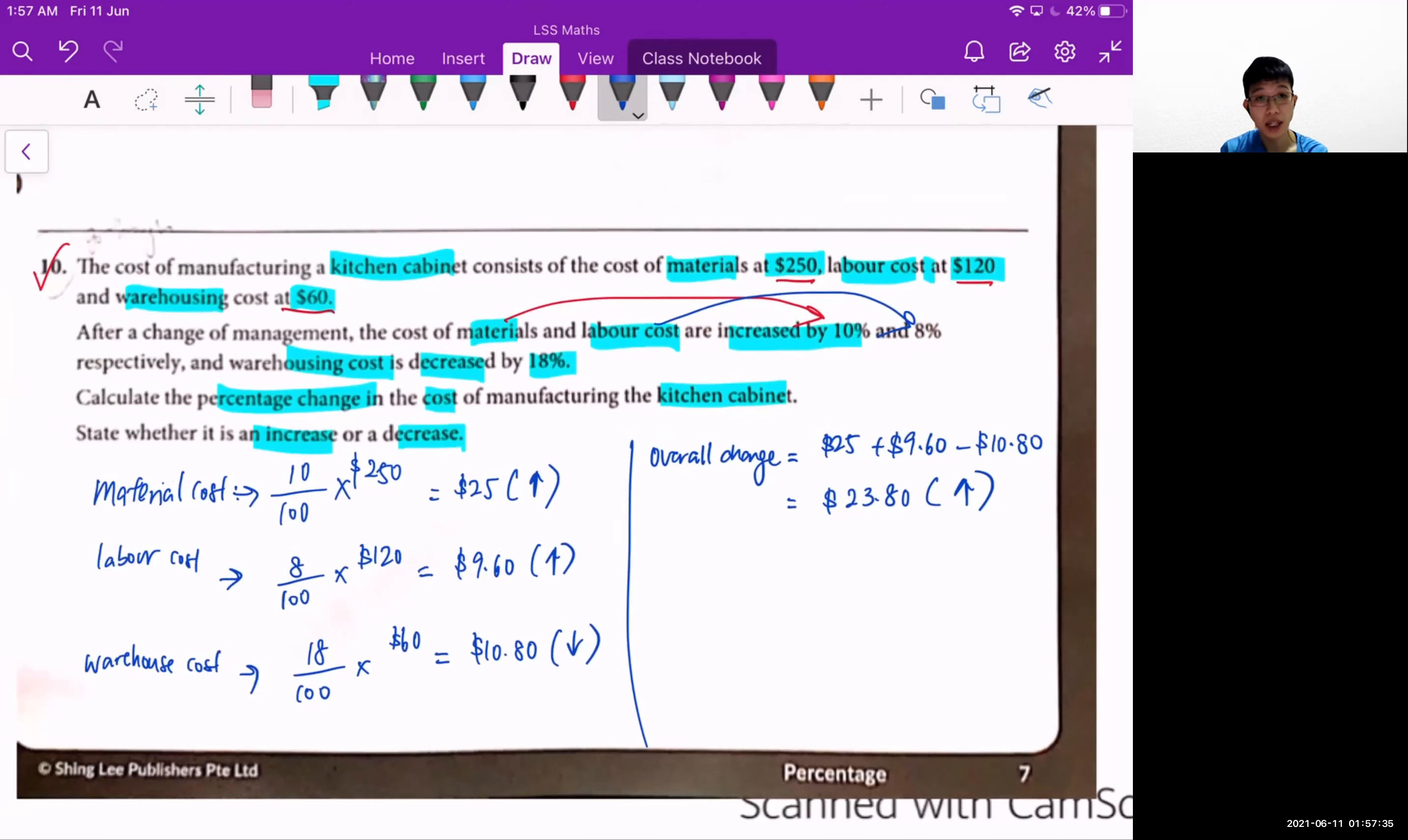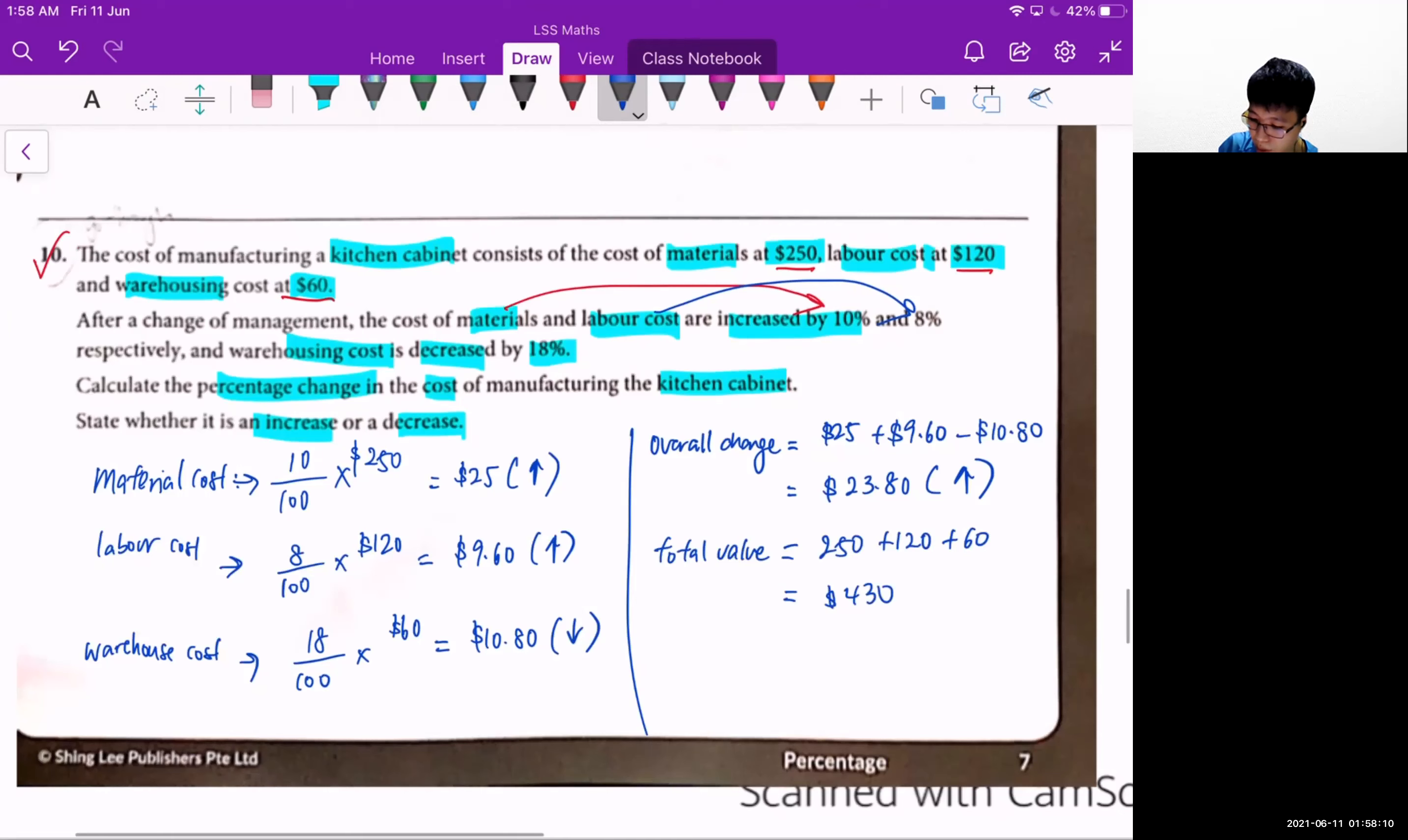To find out the percentage change in the cost of creating this kitchen cabinet, I go back to the formula again - percentage change. First thing, I need to find out what is the total value first. So my total value is $250 plus $120 plus $60, which is $430. This will be my original value.